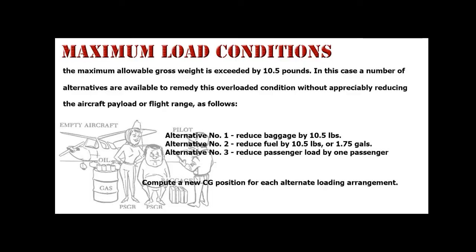Maximum Load Conditions: If the maximum allowable gross weight is exceeded, for example by 10.5 pounds, several alternatives are available to remedy the overloaded condition without appreciably reducing aircraft payload or flight range: Alternative No. 1 — reduce baggage by 10.5 pounds; Alternative No. 2 — reduce fuel by 10.5 pounds (or 1.75 gallons); Alternative No. 3 — reduce passenger load by 1 passenger. Compute a new CG position for each alternate loading arrangement.